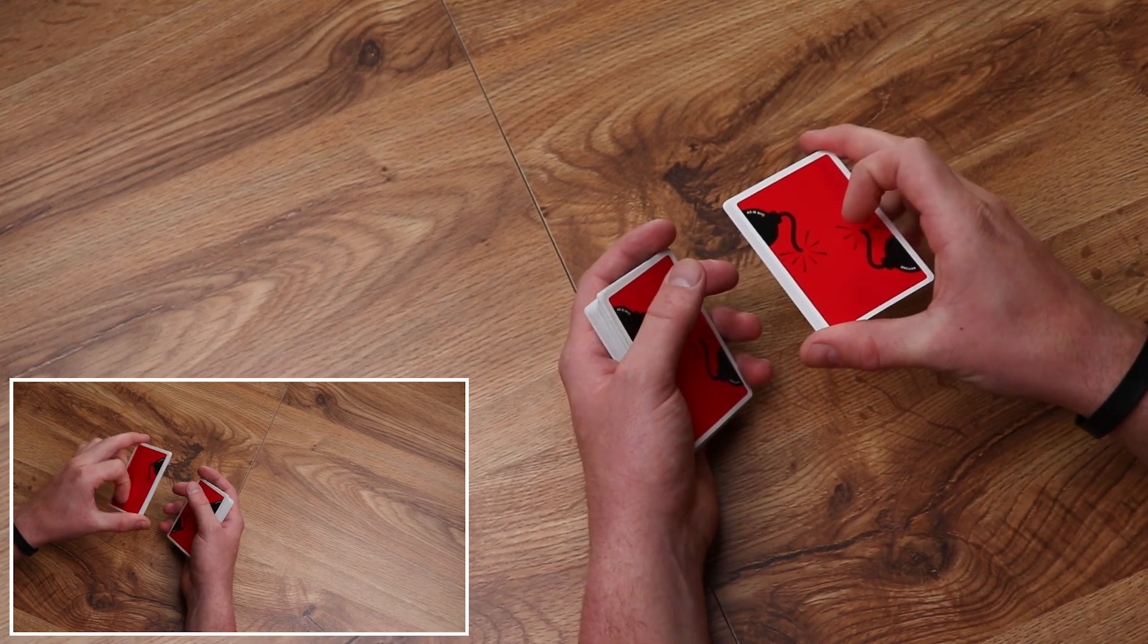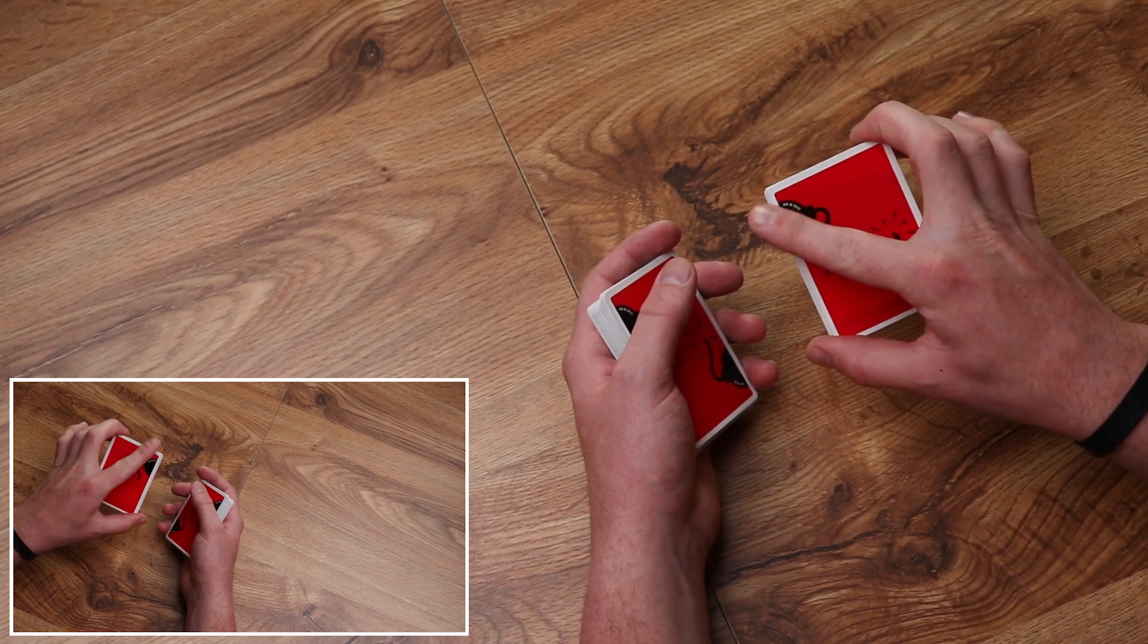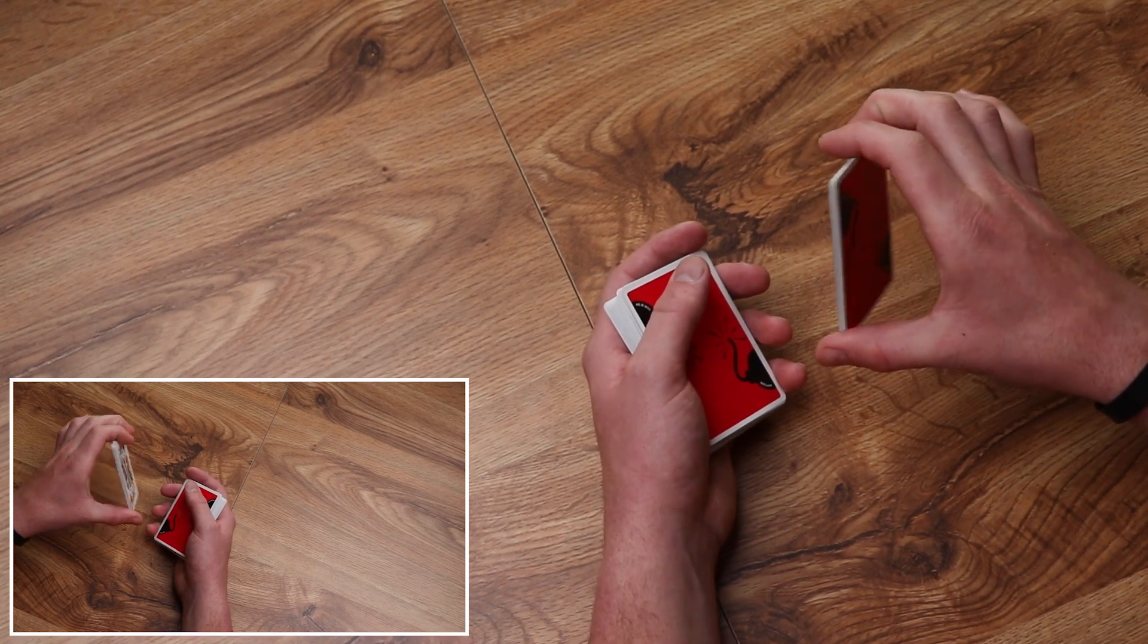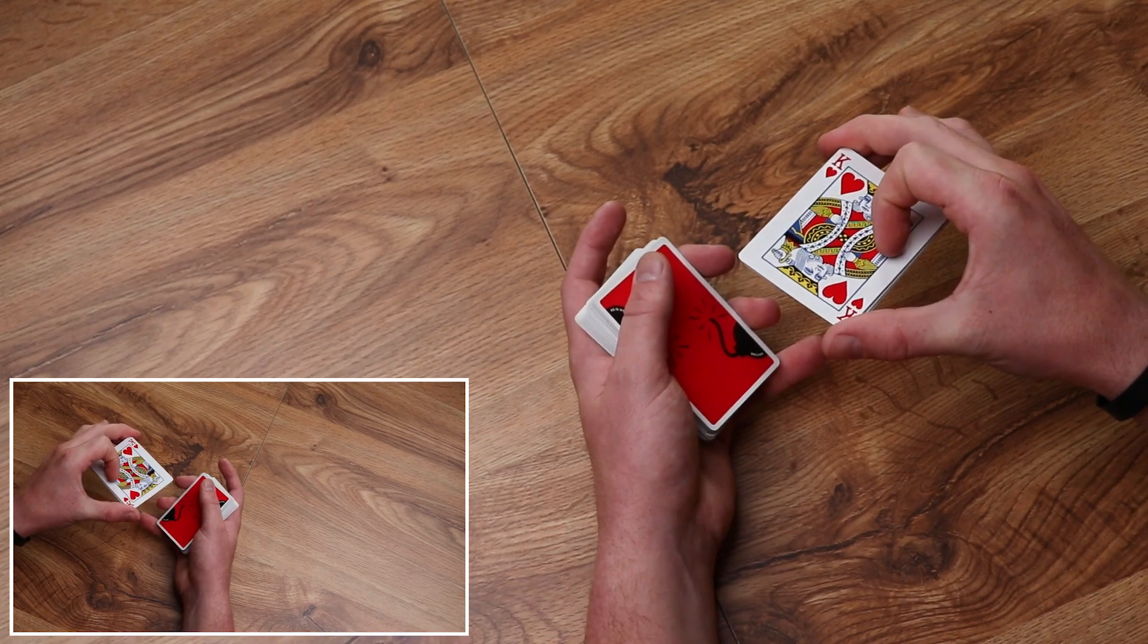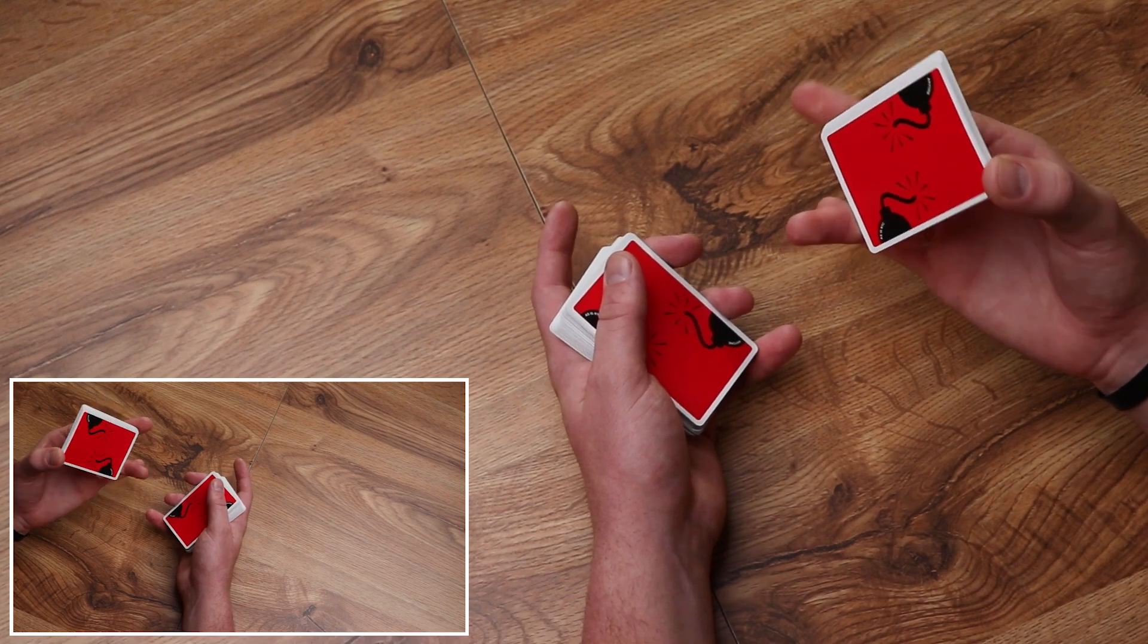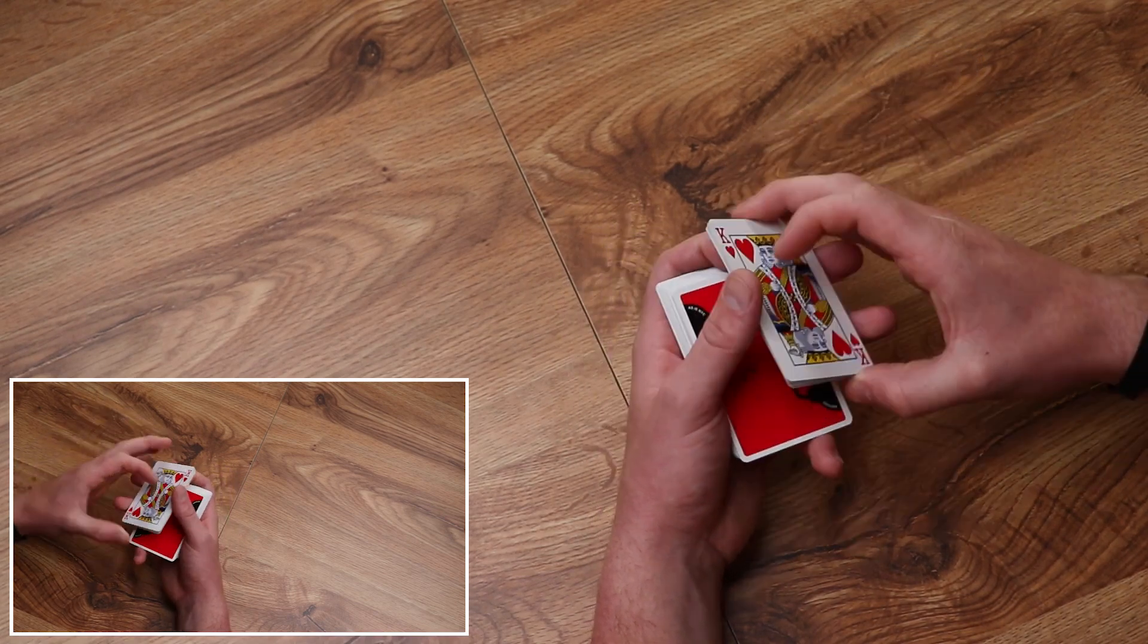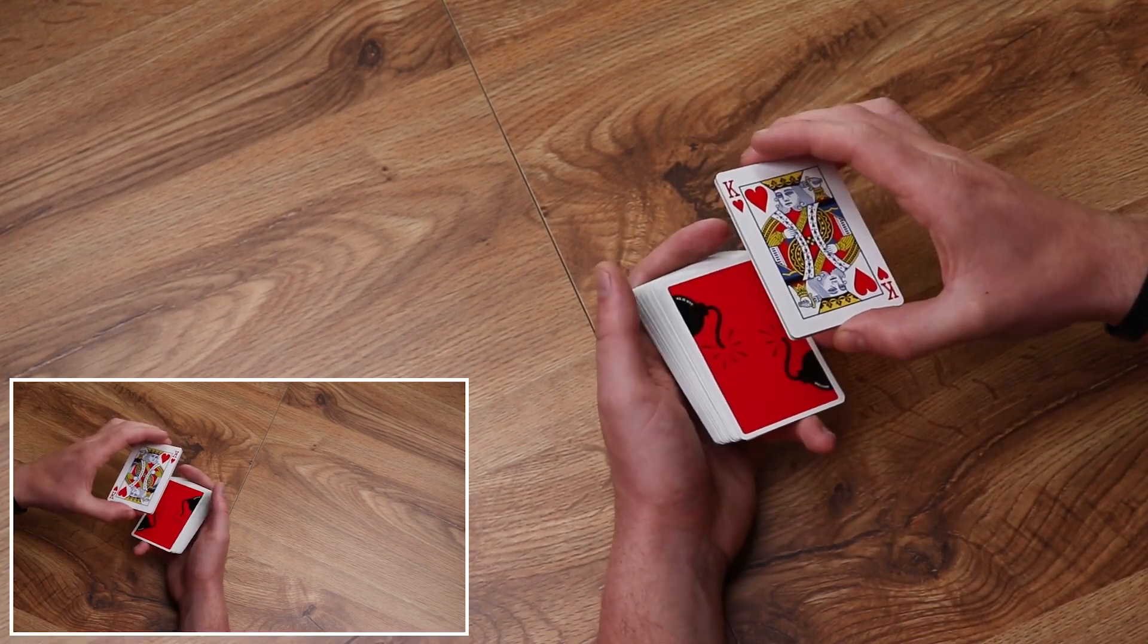After you've dropped this packet over there, this readjustment happens where the thumb is going to be on this long side, the middle finger on this long side, and they're going to go to their respective corners. The middle finger is going to go up and the thumb is going to go down. I usually use my pinky and my index to grip the bottom and top while these fingers readjust to those corners like you're doing corner grip.